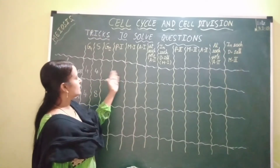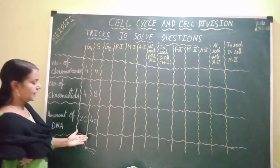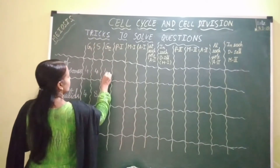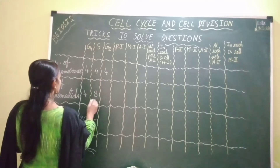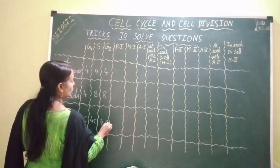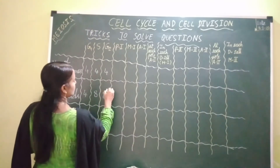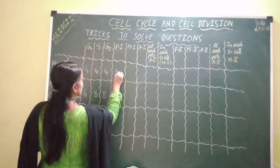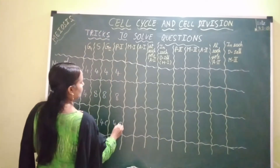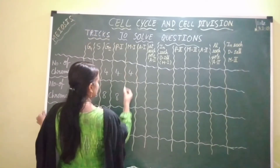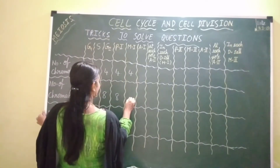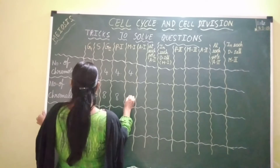Coming to G2 phase, prophase 1, and metaphase 1 — the configuration is the same as in S phase. Number of chromosomes: four. Number of chromatids: eight. Amount of DNA: 4C. During G2, prophase 1, and metaphase 1, these values remain the same: four chromosomes, eight chromatids, and 4C amount of DNA.